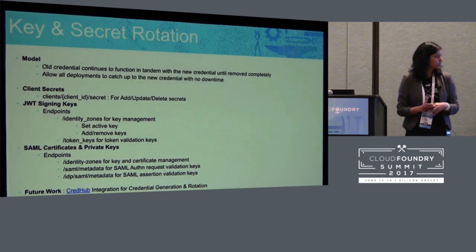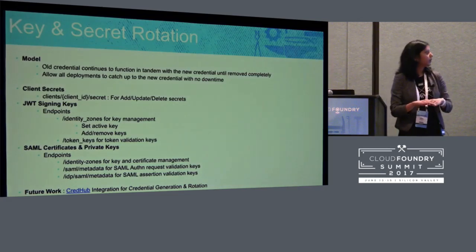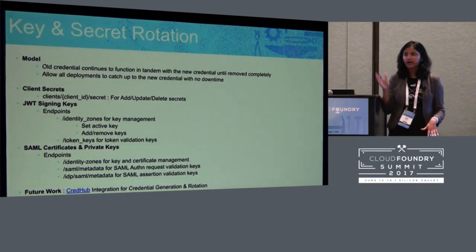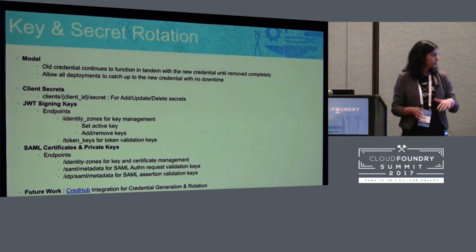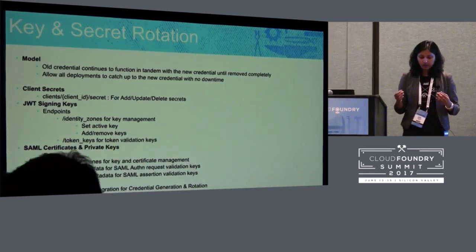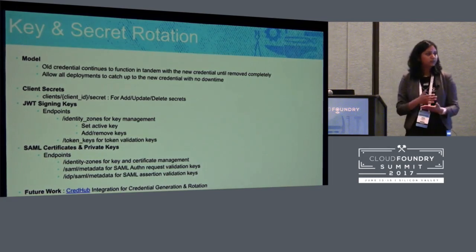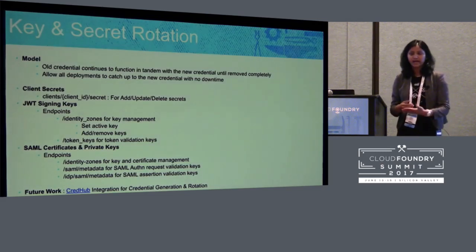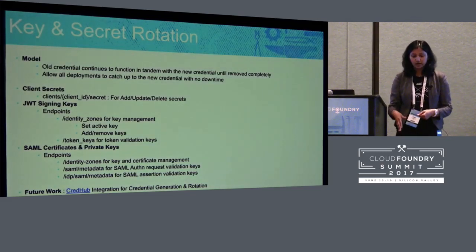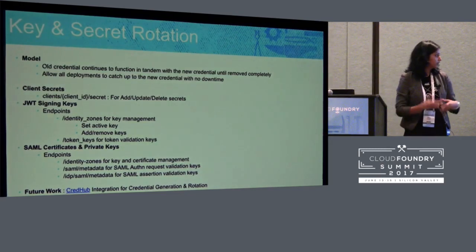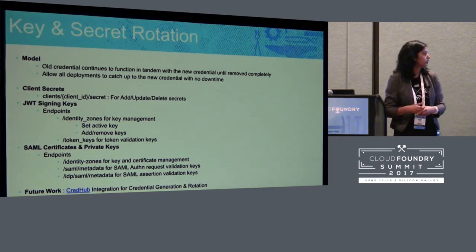SAML certificates and private keys follow pretty much the same model, managed via the identity zone API. With SAML there are two profiles: the identity provider profile and the service provider profile. From the identity provider profile, we have signing and encrypting assertions. From the service provider perspective, we generate a signed authentication request. We always do signing with the active key, but the other keys are still there for the relying party or identity provider to validate the signature.